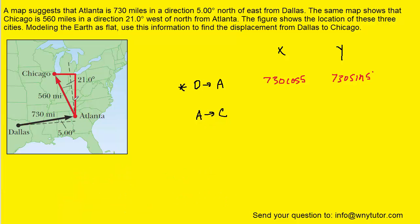We've drawn a right triangle superimposed onto the map for Atlanta to Chicago. Here's the right angle. The vertically oriented segment is the Y component, and the horizontally oriented segment is the X component. The angle here is 21 degrees.